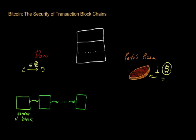He wants to use one of these five Bitcoins to buy a pizza from Pete. What Dan's Bitcoin client will do is create a transaction record that includes information about how Dan got these Bitcoins — in this case, information about this transaction between Carol, who we've marked by C, and Dan for five Bitcoins. And then it specifies that Dan wants to give one of these Bitcoins to Pete, labeled P.